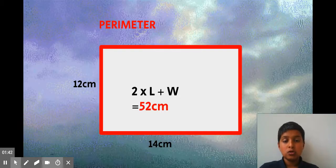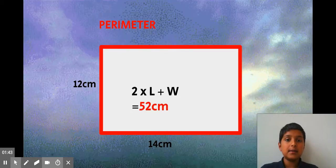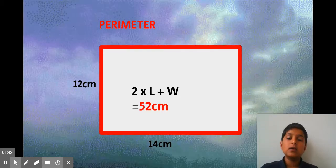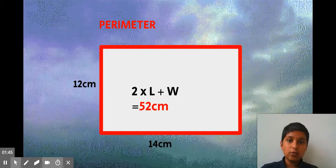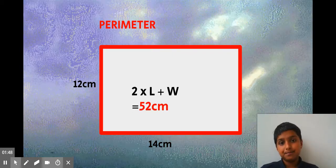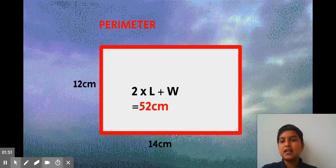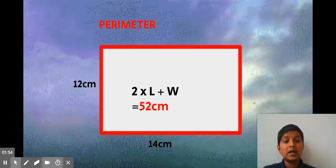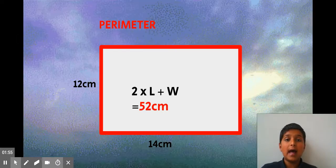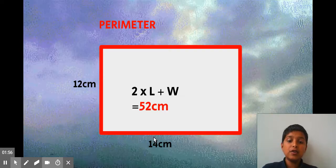2. So 26 times 2, and that answer will be the perimeter. Unlike area, you will not need to add any squared to it, but you must remember to add the unit, so centimeters in this